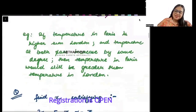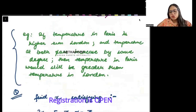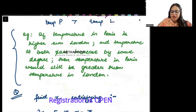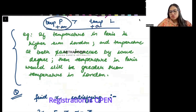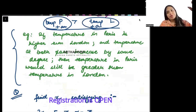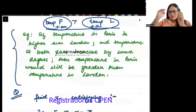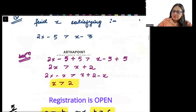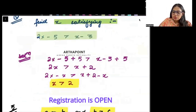Here is an interesting real-world example: if the temperature in Paris is more than the temperature in London, and we add the same amount of temperature to both, Paris temperature will still be more than London temperature. If temperature in both places increases by the same amount, the inequality is preserved.